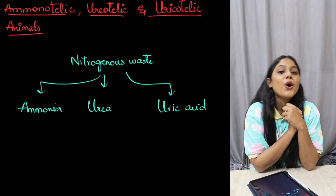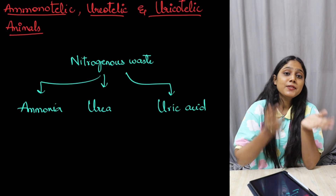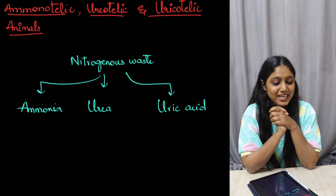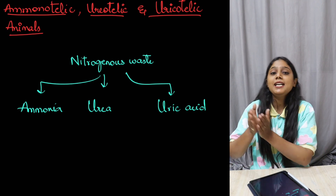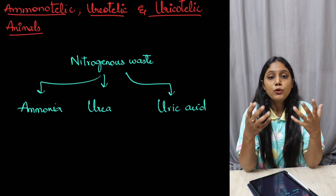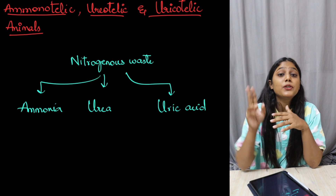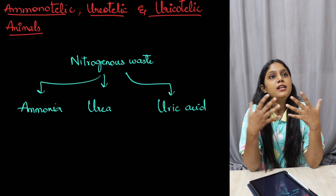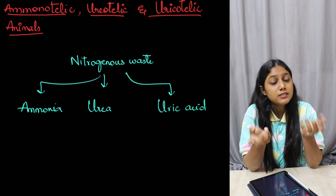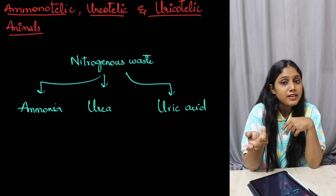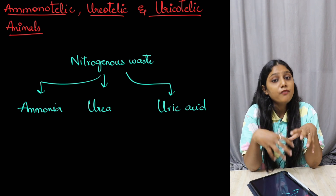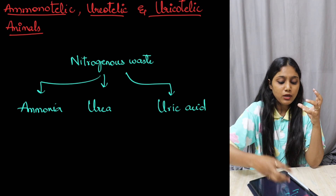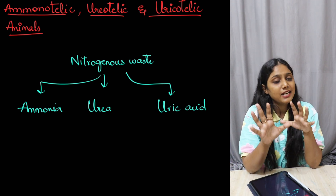Welcome back to another video lecture on excretion. Today we are going to discuss ammonotelic, ureotelic, and uricotelic animals. When we talk about these three categories, we are classifying animals on the basis of their primary nitrogenous waste — what they are producing. We are dividing them into ammonotelic, ureotelic, and uricotelic animals.